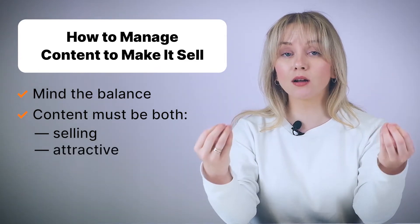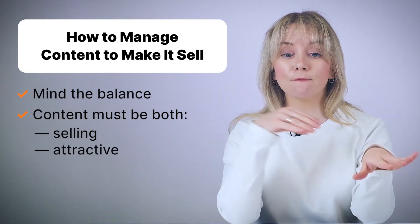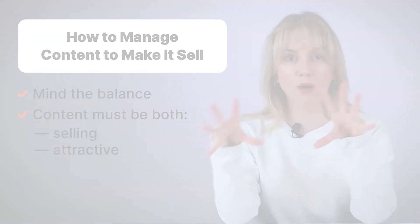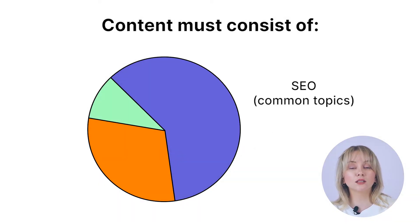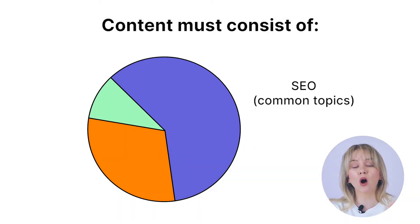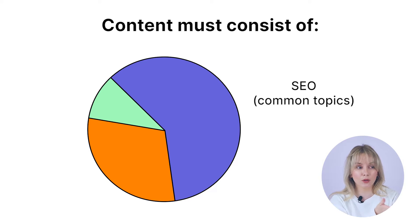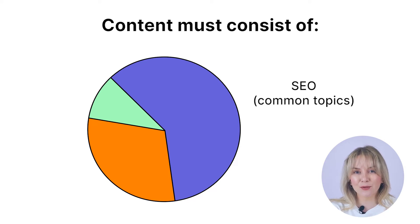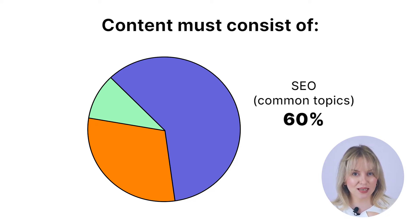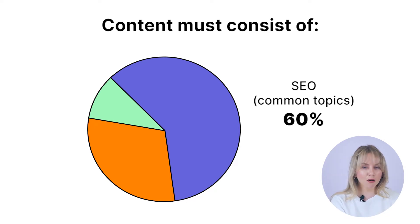Ideally your content is going to be divided into three big parts. The first one is SEO content on common topics connected with your company's business. These common topics are going to attract quite a lot of traffic, and this type of content is going to make up around 60% of all the content your company produces.